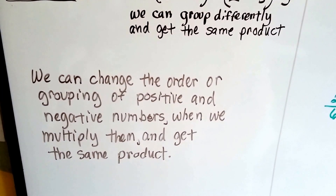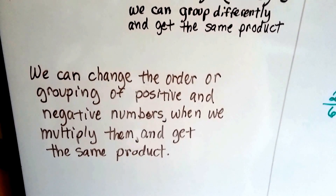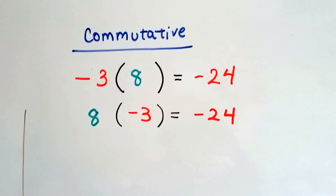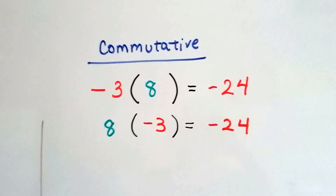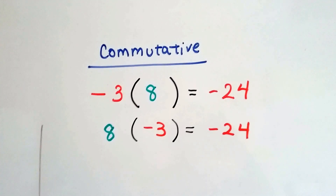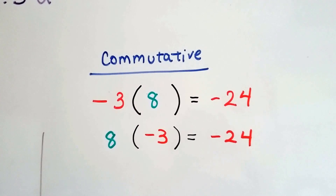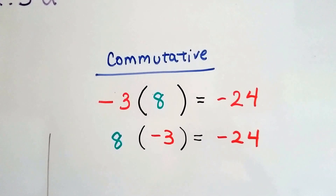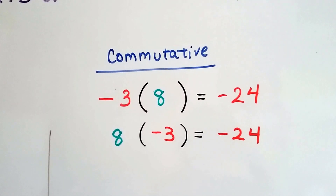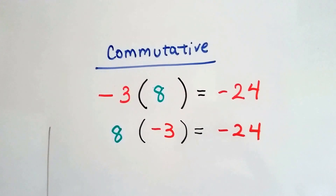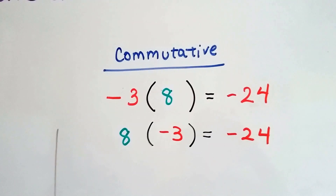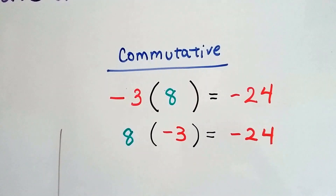We can change the order in grouping of positive and negative numbers when we multiply and get the same product. With the commutative property, we've got negative 3 times a positive 8, and it's going to equal a negative 24 because we have unlike signs. If we multiply the positive 8 times the negative 3, we're going to get a negative 24 because they're unlike signs. It doesn't matter which order we multiply them in.